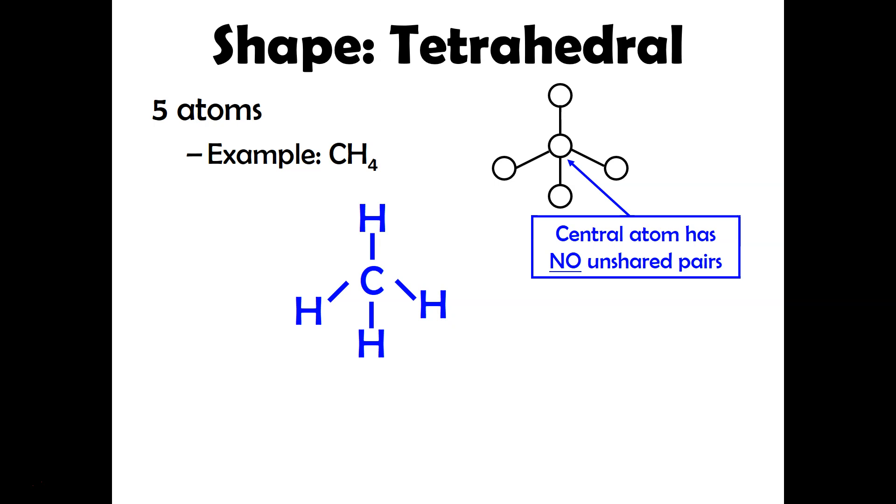A very common example would be methane or CH4. And for this one, because there are four electron domains, you would expect to see approximately a bond angle of 109.5. Anytime you have about four electron domains and an electron domain is basically just an area where the electrons are located. So for example, this is a bond that's considered an electron domain.